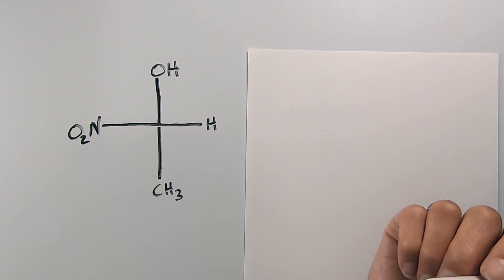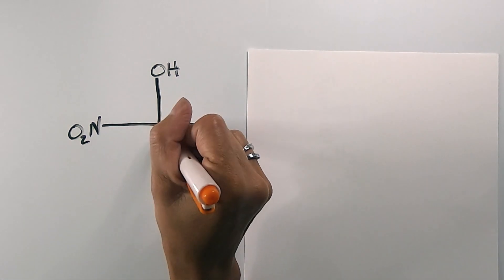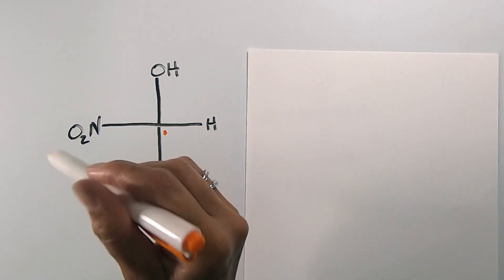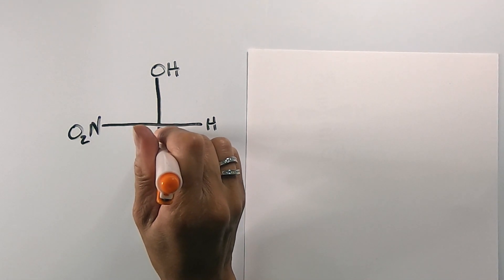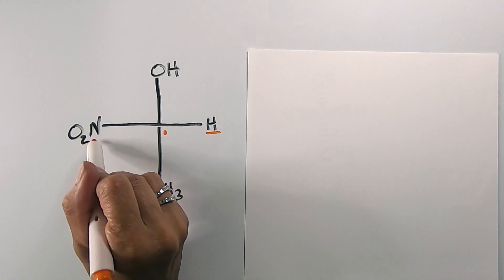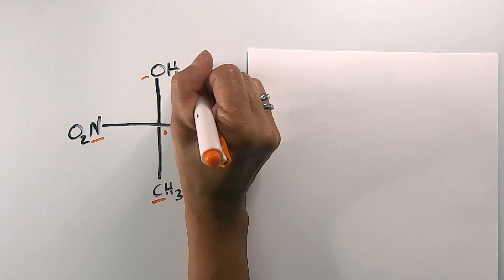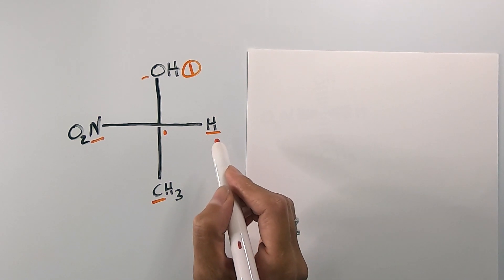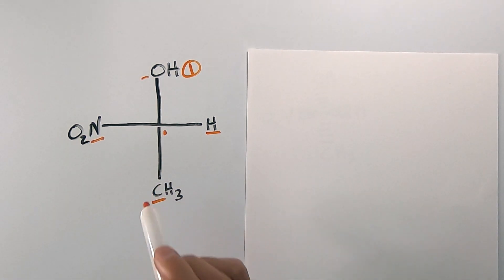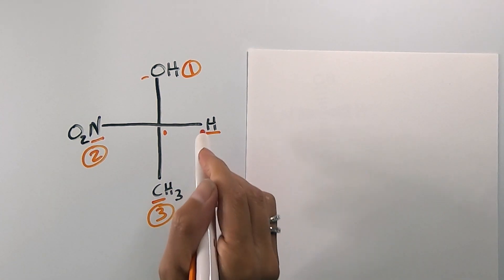Let's try it again with another Fischer projection. Identify the chiral carbon in the center — it has four single bonds to four different things: a hydroxide, a hydrogen, a methyl group, and a nitro group. Going to the first attached atom in each direction, we get hydrogen, carbon, nitrogen, and oxygen. Oxygen gets priority one, hydrogen gets priority four, and between nitrogen and carbon, nitrogen has the higher atomic number, so it gets priority two and carbon gets priority three.